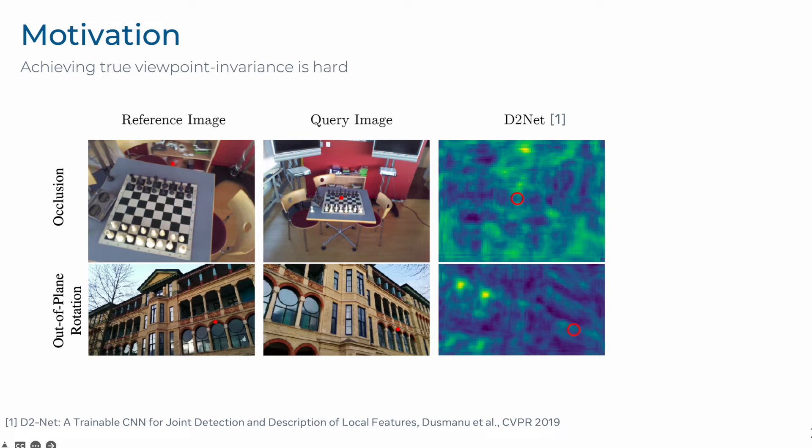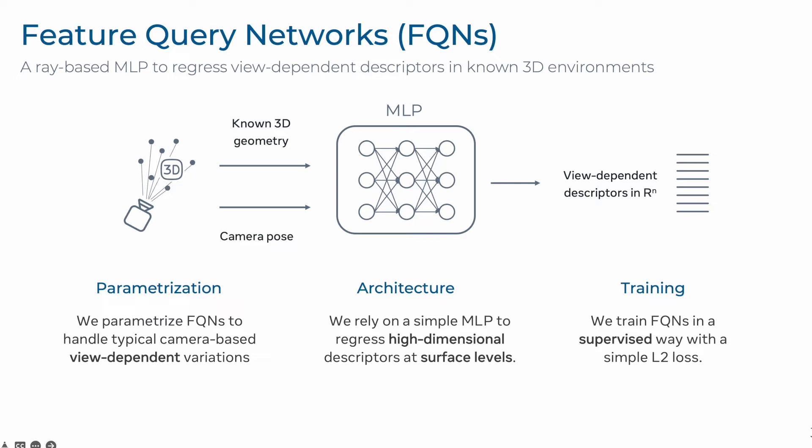In this paper, instead of trying to achieve viewpoint invariance, we instead try to explicitly model the viewpoint variance of a given descriptor on a given scene. To this end, we introduce Feature Query Networks, or FQNs for short.